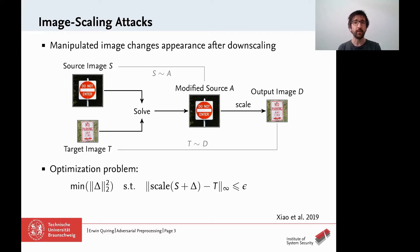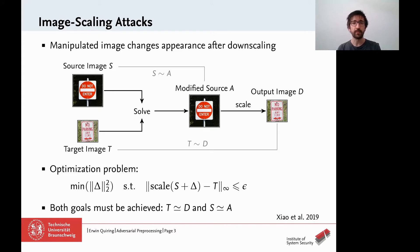This attack is solved as an optimization problem. We seek a minimal perturbation delta that can be added to the source image such that the downscaled result is close to the target image. In summary, the adversary has two goals: the output image must be similar to the target image, and the modified source image must be similar to its original version.